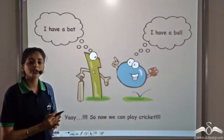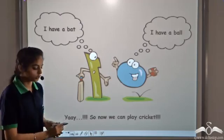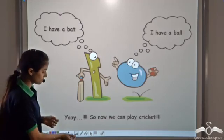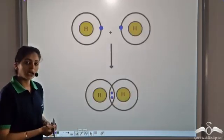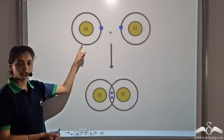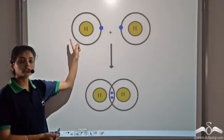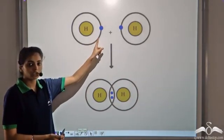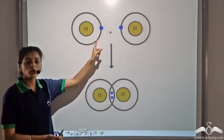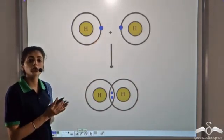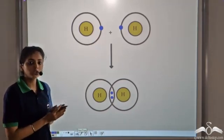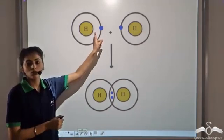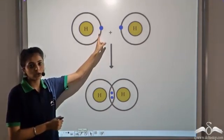At times, atoms like to share electrons. For example, Hydrogen. Hydrogen has one electron in the valence shell. In order to have the duplet structure, it needs one more electron in the valence shell.